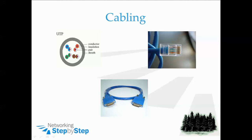In the lower middle, we have a picture of the DB60 serial cable. Traditionally, this cable and termination type was utilized in WAN connectivity. The cable gets its name from the 60 pins on the male end of the connection, or the 60 receptacles on the female end.